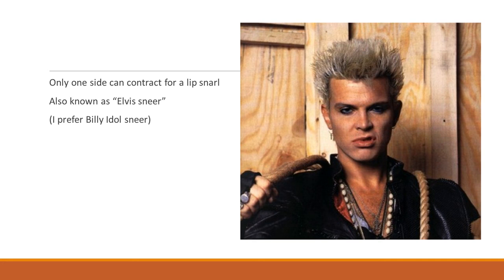With only one side contracting, you get a lip snarl — known as the Elvis sneer, but Billy Idol back in the '80s mastered it. You can see his lip just pulling up on one side. It's kind of like The Rock and Spock doing their eye lift, but here it's the lip lift or lip snarl. I wonder if you can do the lip snarl and lift your eye at the same time — something fun to practice.